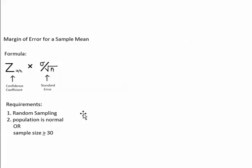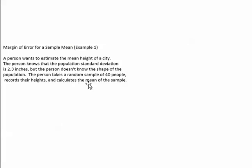Now let's go through an example. A person wants to estimate the mean height of a certain city. The population standard deviation is known to be 2.3 inches, but the shape of the population is unknown — the person doesn't know if heights are skewed or bell-shaped. The person takes a random sample of 40 people, records their heights, and calculates the sample mean by adding the 40 heights and dividing by 40.